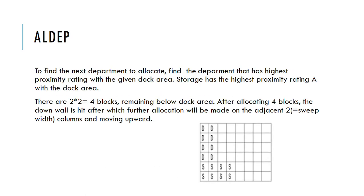To find the next department, we identify the department with the highest proximity rating with the given dock area. Storage has the highest proximity rating with the dock area. There are four blocks remaining below the dock area. After allocating four blocks, the bottom wall is hit, after which further allocation will be made adjacent to the next columns.